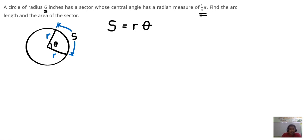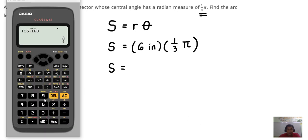So basically, to solve for the arc length, we just simply substitute. So this is a simple substitution. Therefore, S, the arc length, is equal to the radius, six inches, times the theta, one-third pi. So the value of the arc length is six times one-third pi,